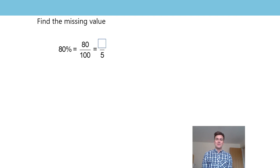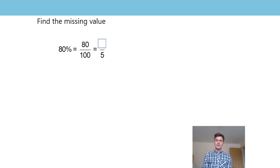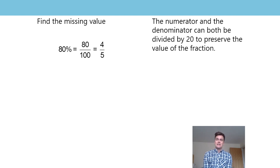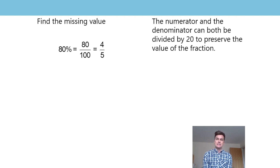What value is missing now? Notice what's changed with the denominator — it's no longer 100. However, this new fraction must still be equivalent to 80% and 80 hundredths. Press pause, have a go at working out the missing value, come back when you're ready. Which value is missing? On three — four. Four fifths. How did you work that out? You've noticed that the numerator and denominator can both be divided by 20: 80 divided by 20, 100 divided by 20. By doing that, you've preserved the value of the fraction. The value of four fifths is equivalent to 80 hundredths and 80%.